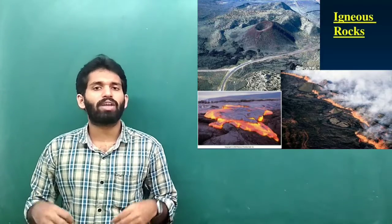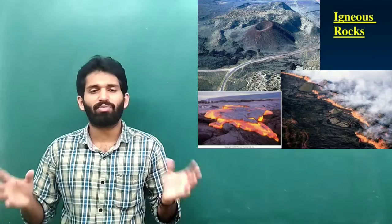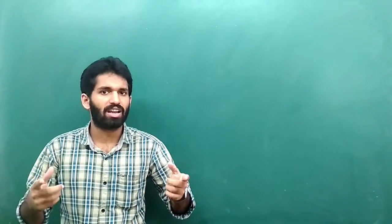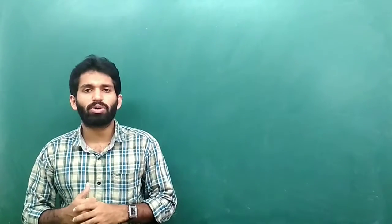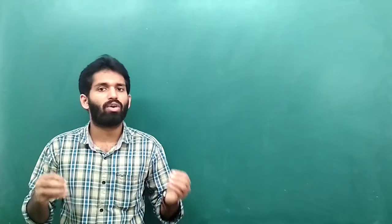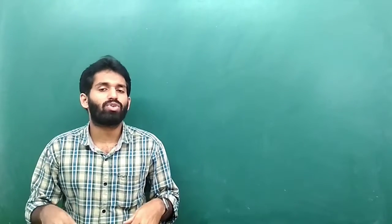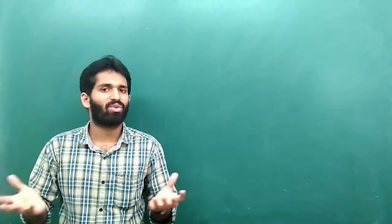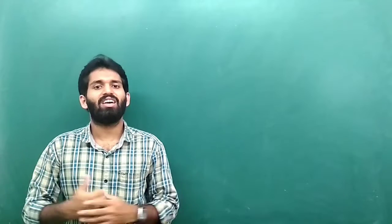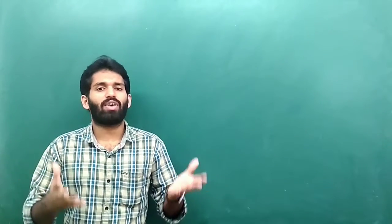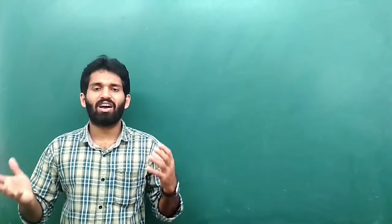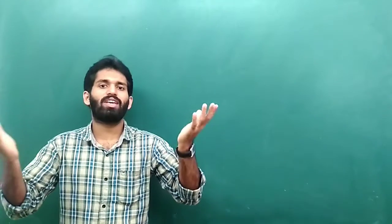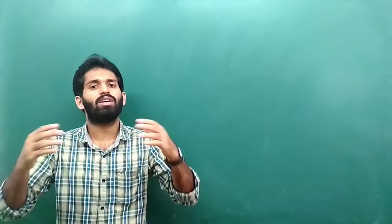Igneous rock is formed by the cooling down of lava. The earth has three main parts: the outer crust, inside there is a mantle, and deep inside there is the core, which is formed by hot boiling liquid called lava or magma. This lava sometimes comes out through some cracks due to high pressure and heat. When this hot boiling liquid is inside the earth it is known as magma, and when it comes out through a volcano or volcanic eruption it is known as lava.